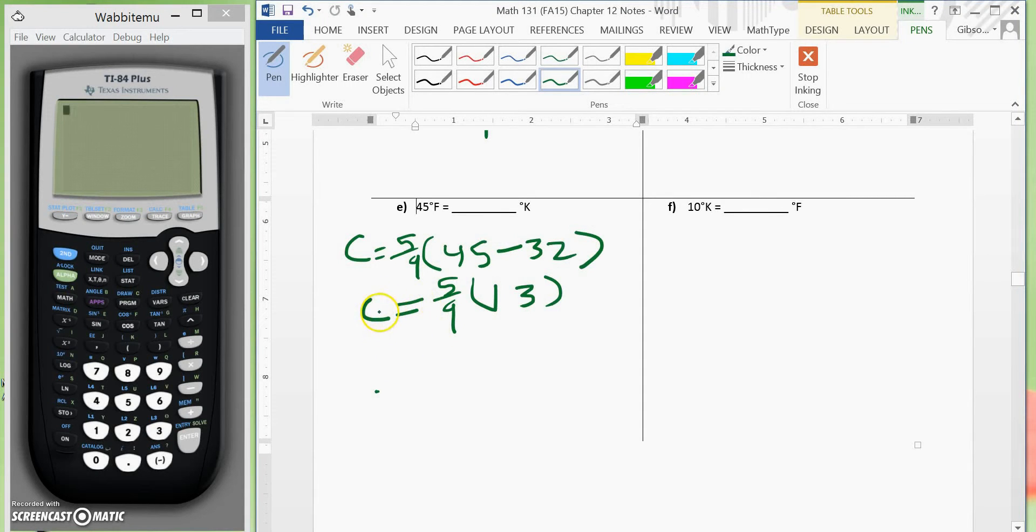Okay class, speaking of where we left off at, we have Celsius is equal to 5 ninths times 13. We'll make this 13 over 1.